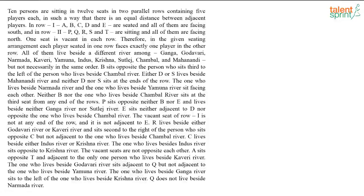10 persons are sitting in 12 seats in two parallel rows containing five players each, such that there is an equal distance between adjacent players. In row 1 we have A, B, C, D and E, all facing south. In row 2 we have P, Q, R, S and T, all facing north. There is one vacant seat in each row, so each player in one row faces exactly one player in the other row.